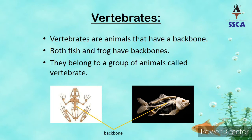So students, aap kya hue? Aap bhi vertebrates hain. Both fish and frog have backbones. Fish aur frog dono ke paas backbone hai. They belong to a group of animals called vertebrates. Yeh animal ke group vertebrates se belong karte hain. Agar aap neeche di hui dono pictures dekhein, toh ek picture mein frog ka skeleton hai aur second picture mein fish ka skeleton hai. In dono ke paas backbone hai, isliye yeh dono vertebrates se belong karte hain.